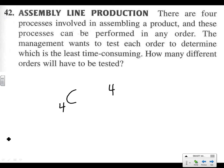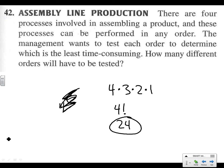There are 4 things we can put in the first spot, then 3 for the next spot, 2 for the next, and just 1 for the last. This is 4 factorial. We're not using combinations here because we're using all four of them — combinations would apply if we were only picking, say, 3 out of 4 processes. So 4! = 4 × 3 × 2 × 1 = 24.